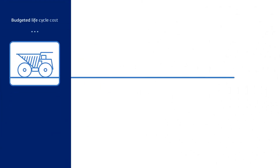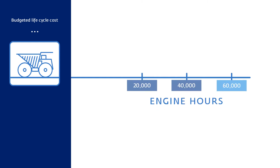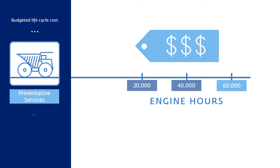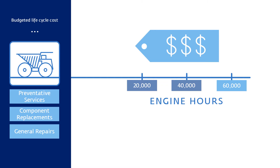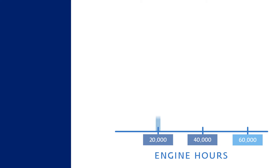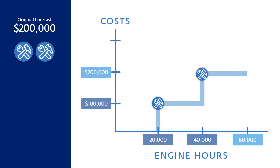For example, this truck has a life expectancy of 60,000 hours. When it was purchased, the total cost was calculated based on a lifecycle strategy that included preventative services, component replacements, general repairs, and even a retirement plan. The strategy is to replace an engine every 20,000 hours, so over its life there would be two engine replacements at a cost of $100,000 per engine.